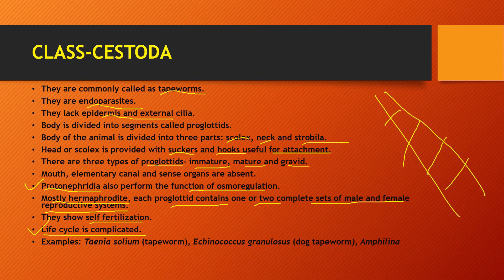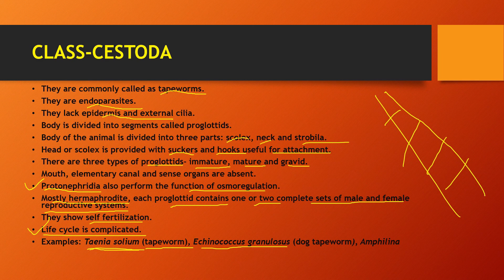An example is Taenia solium, which was taught in Class 11 Biology. A memory trick — our friend's name was Tania, so we remember Taenia solium as the tapeworm. The second example is Echinococcus granulosus — the dog tapeworm. You can remember them by their common names.